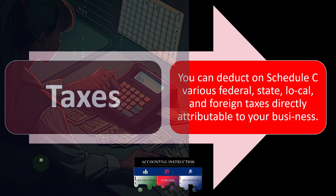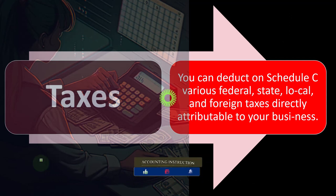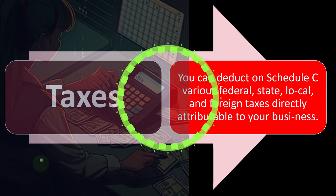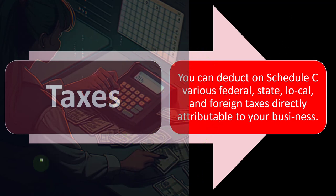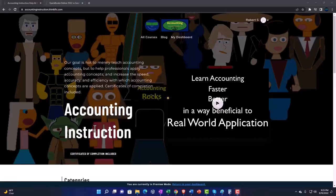Now, you might be saying: I'm doing this to report my federal income taxes — how does it make sense that I get an expense?